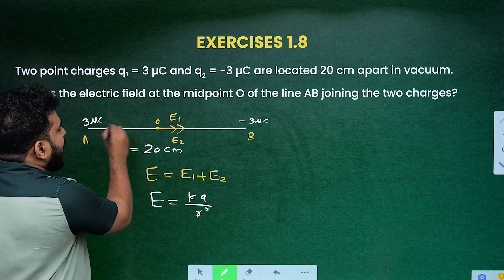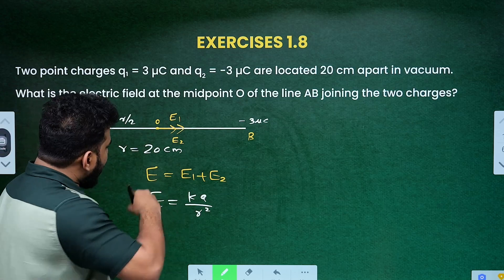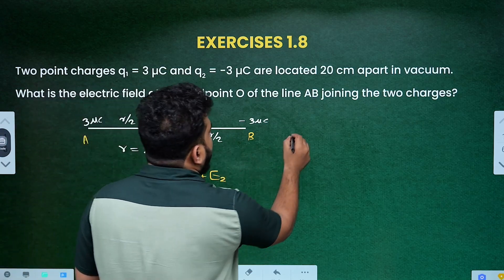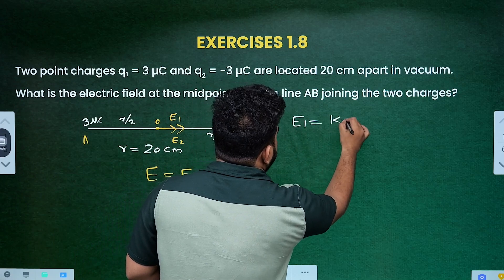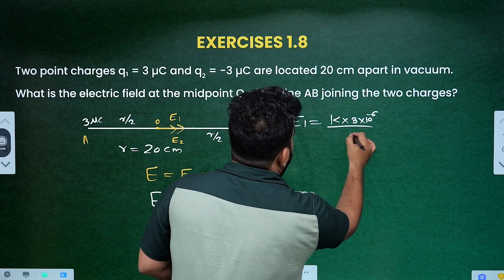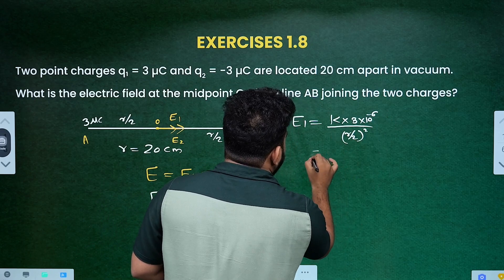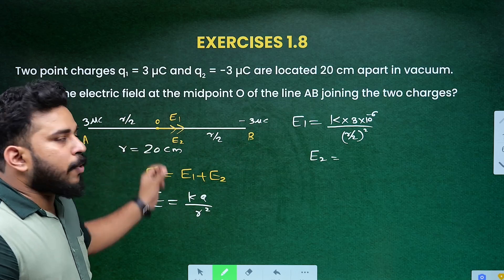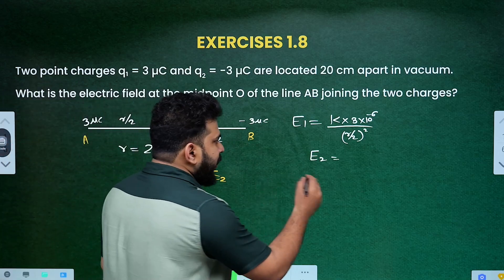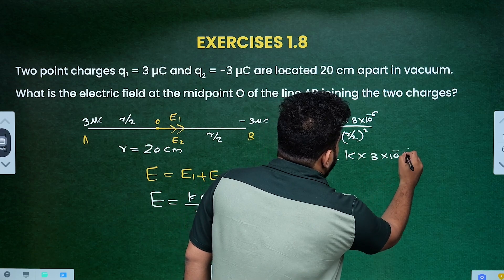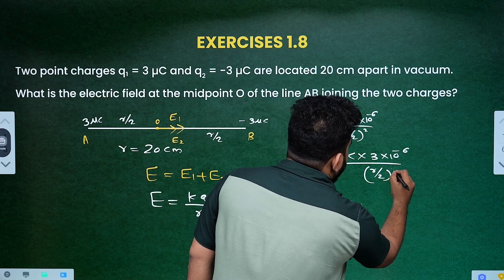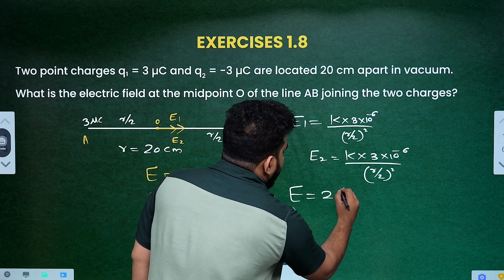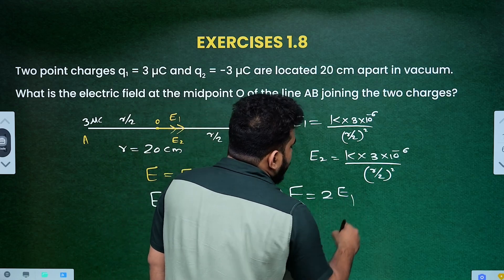The equation is E equals K times Q divided by R by 2 squared. E1 equals K into Q into value 3 into 10 raise to minus 6 divided by R by 2 all squared. E2 has the same equation. Total electric field is equal to 2 times E1 or E2.